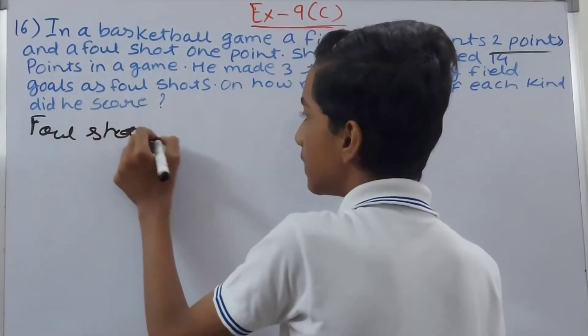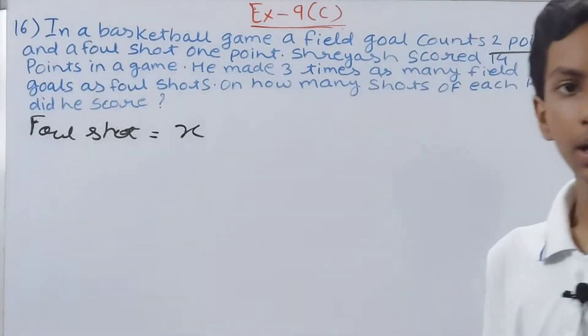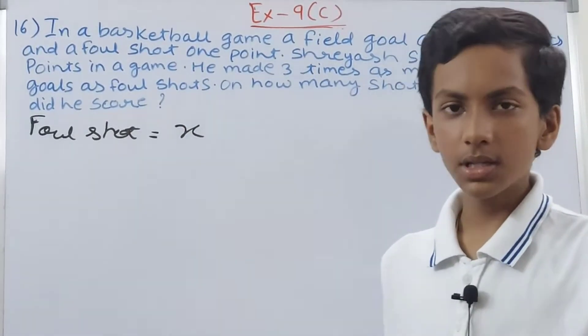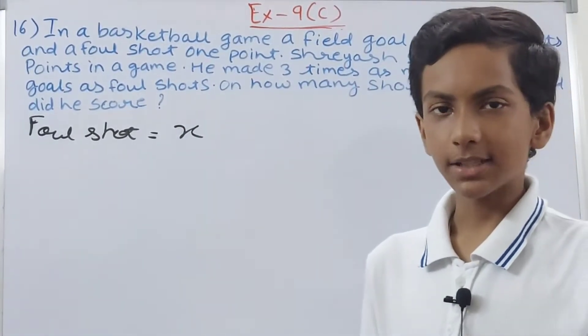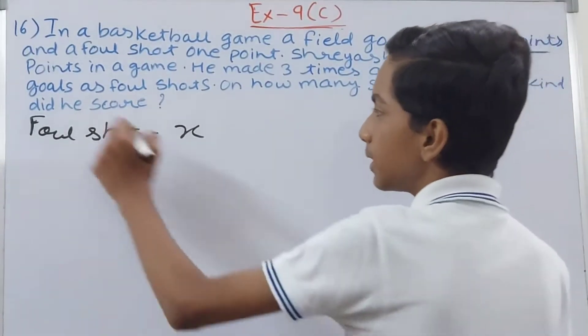First, let's assume the foul shot as x. Since a foul shot is 1 point, we can say foul shot equals x. But a field goal is 2 points, so this becomes 2x.